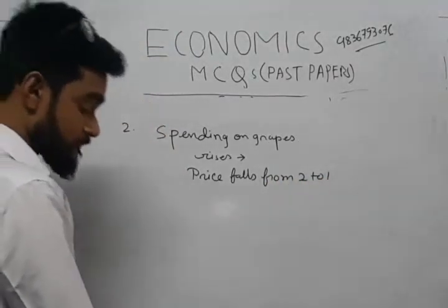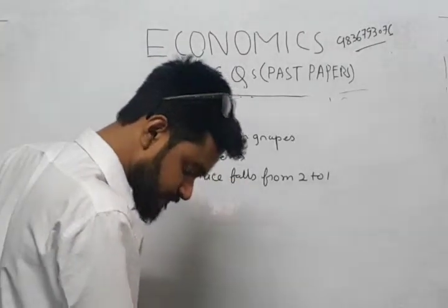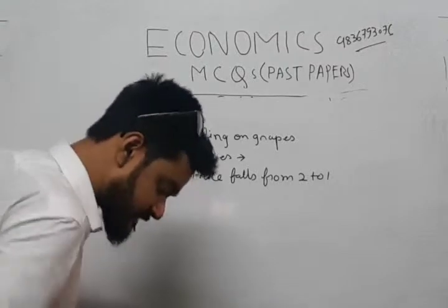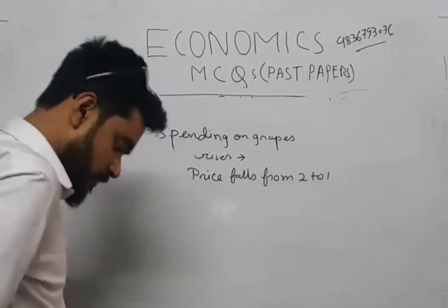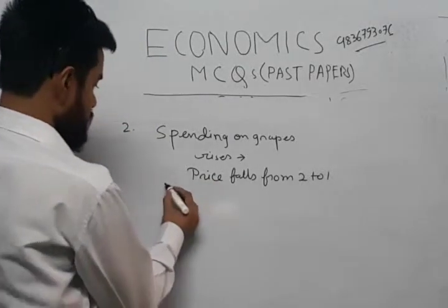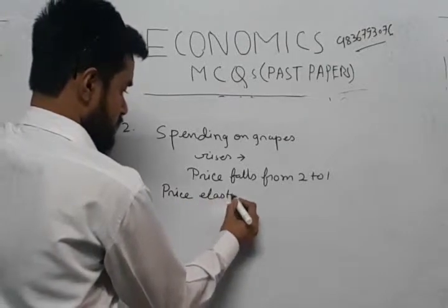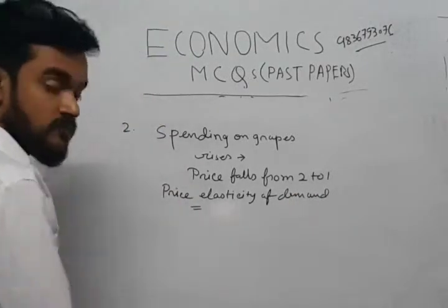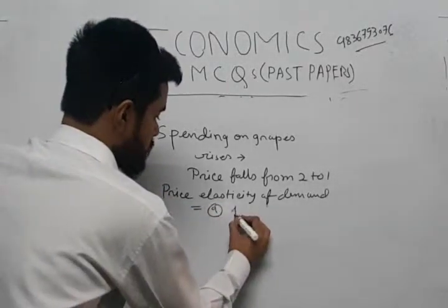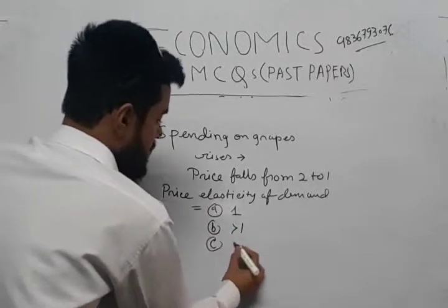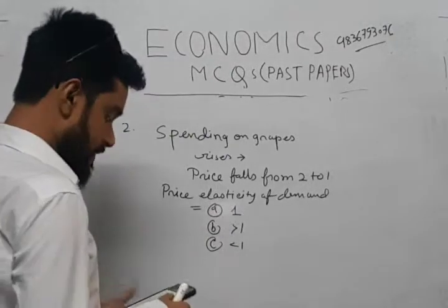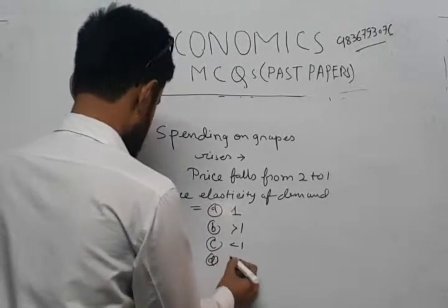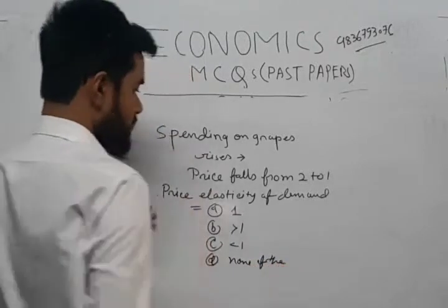When price falls from 2 to 1, his expenditure rises. Four options are given: (A) elasticity equals one, (B) elasticity greater than one, (C) elasticity less than one, and (D) none of the above.